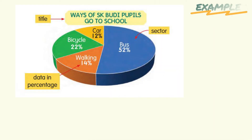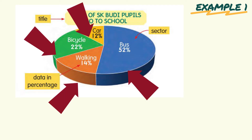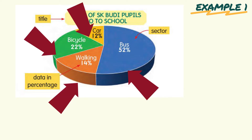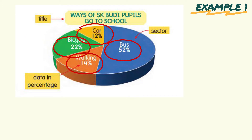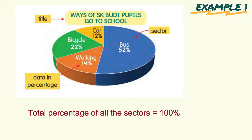Look at this pie chart. This is the title of the pie chart. This part is called a sector. There are four sectors in the pie chart. These are the data of each sector, and the data in the pie chart represents a percentage. The total percentage of the pie chart should be 100%, which means when we add up all the data in the sectors, the total should be 100%.